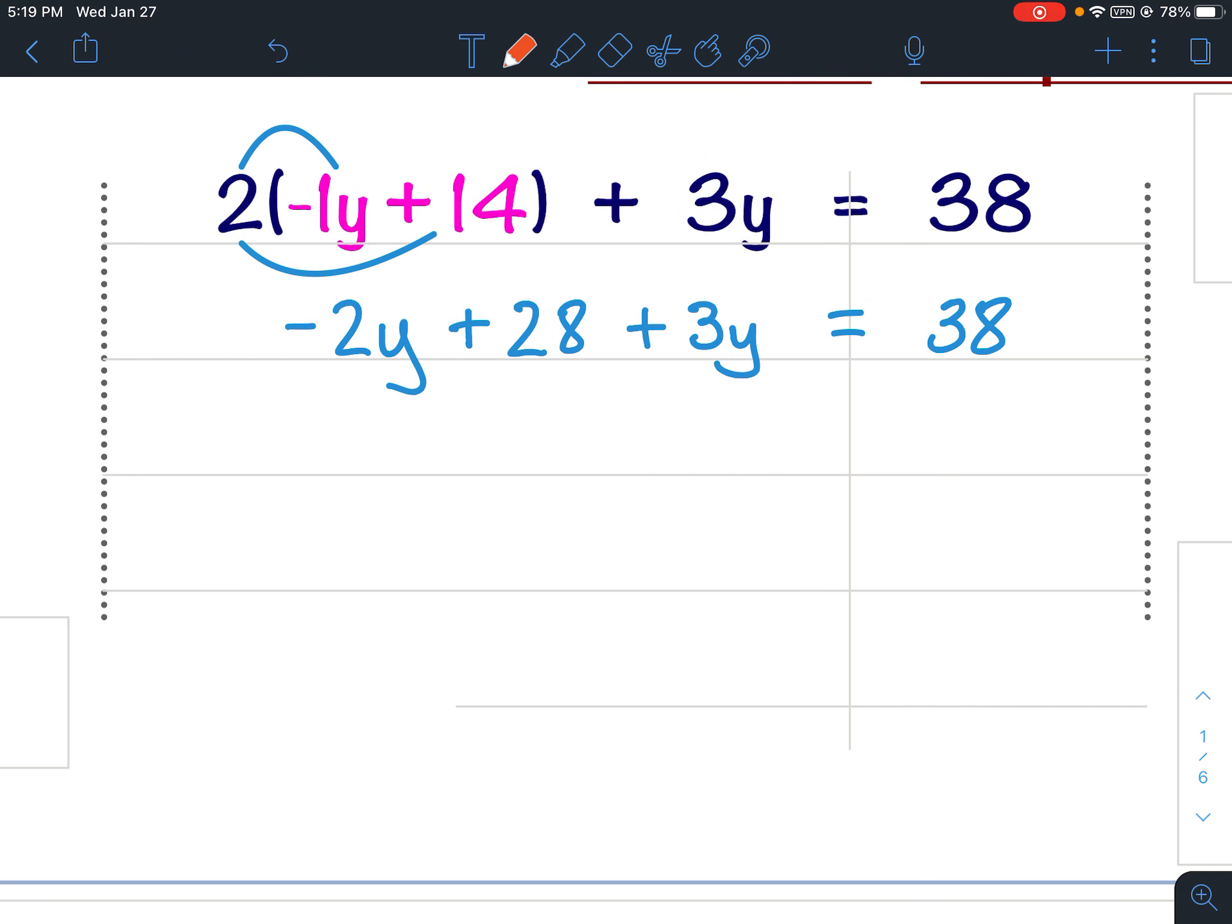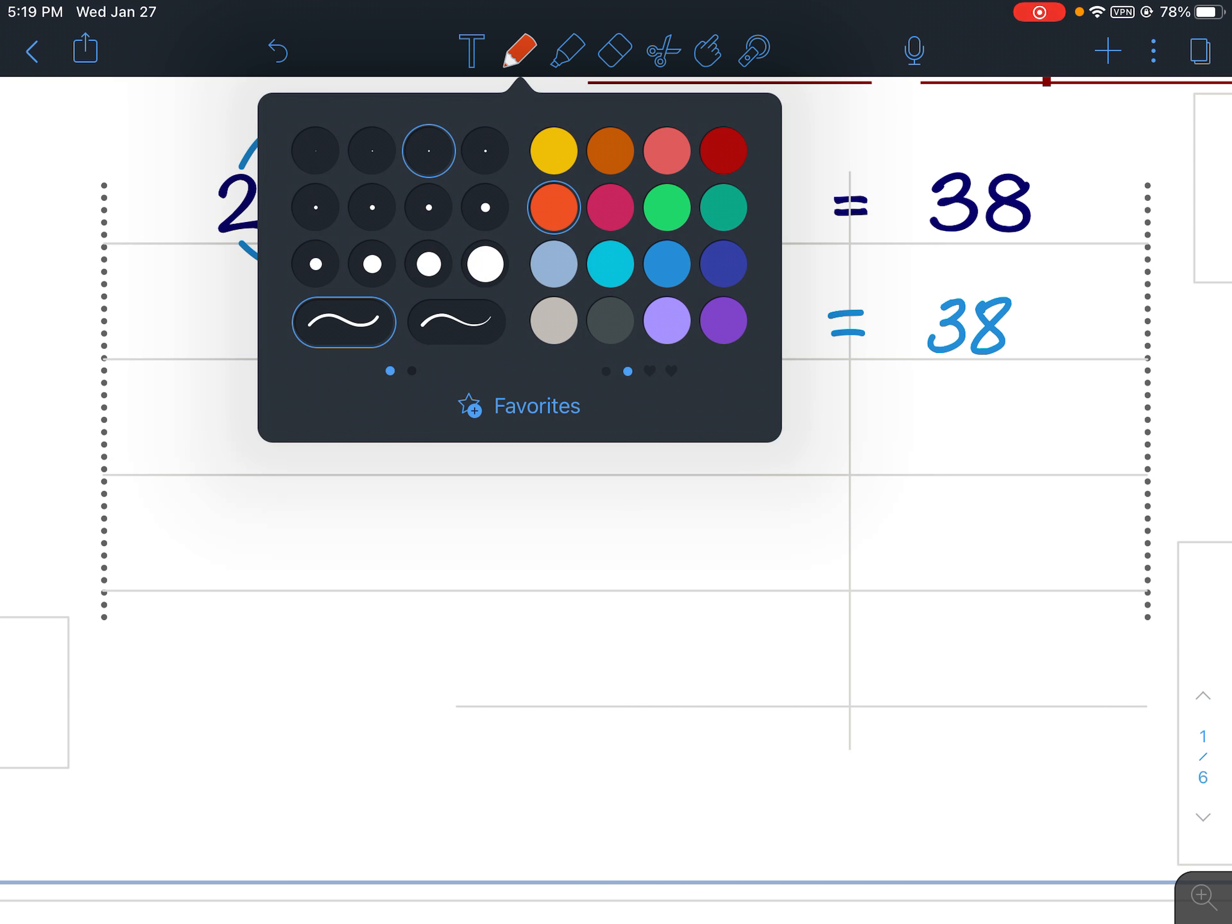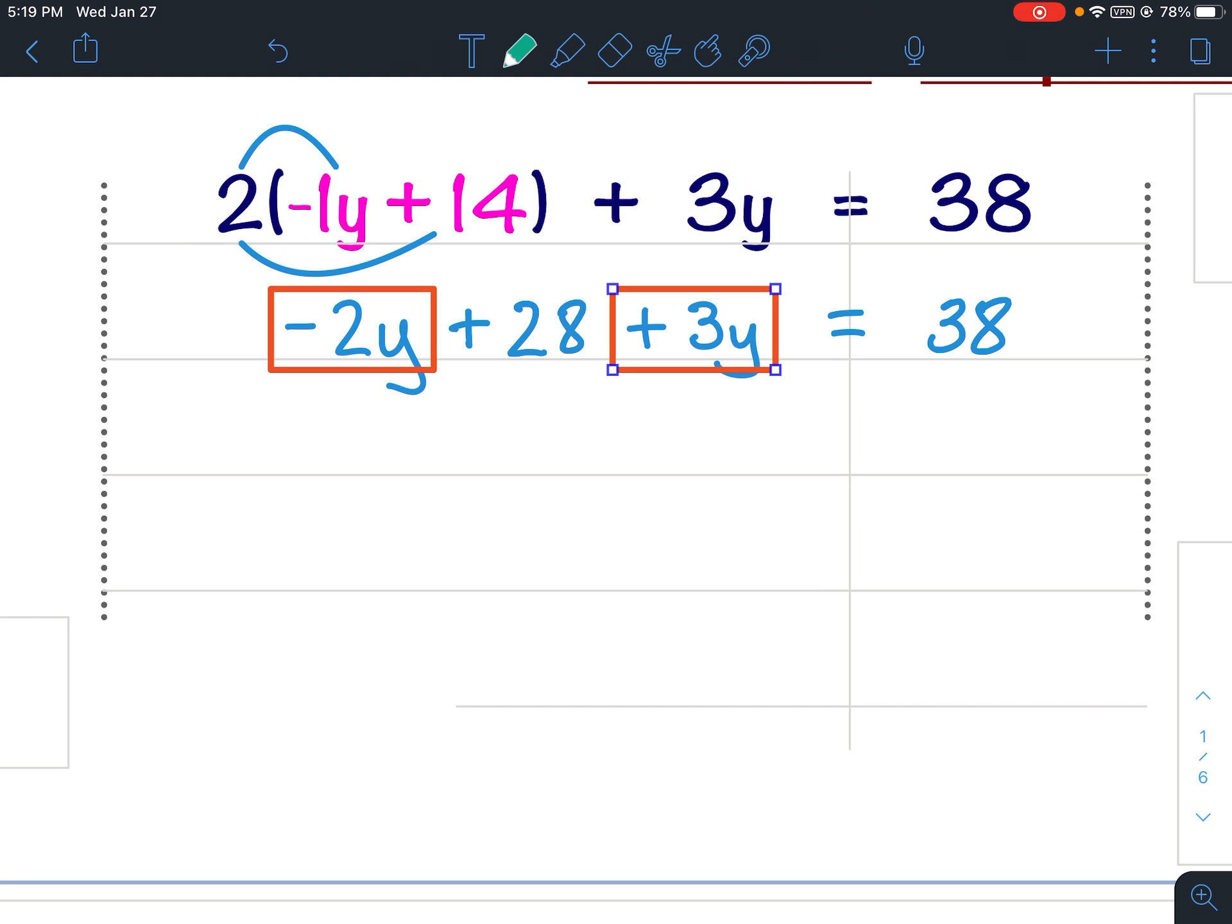Step 2 on multi-step equations is to combine like terms. So my next step would be to combine these like terms. So I've got negative 2y plus 3y. In other words, 3 minus 2 is 1y. Because it's a positive 1, I don't need to put it, so it would just be y. Bring down the 28 and set it equal to 38.